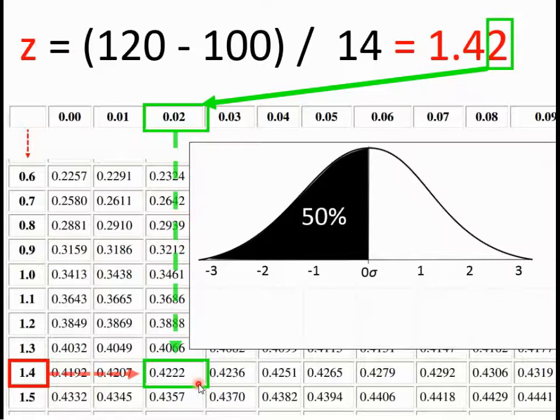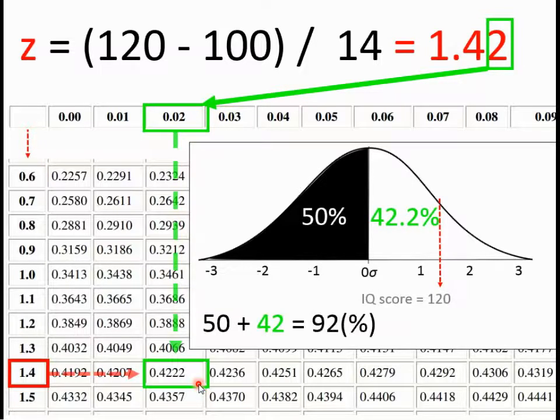We have 0.422, and so there we have it. We know now that a z-score of 1.42 corresponds to 42.2%. From this point, it's just a matter of adding those values. We know that 92% of the population is likely to have an IQ score below 120.